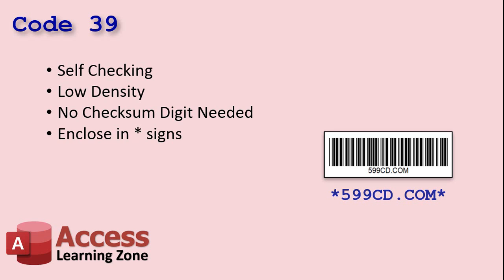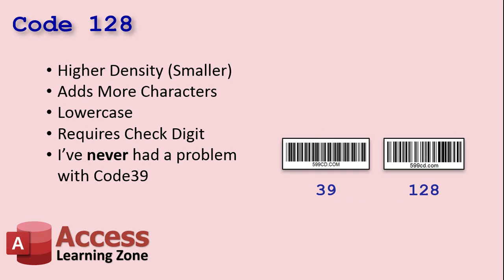All you have to do is enclose whatever your code is inside of asterisks — that's it. That's how the barcode scanner knows where to begin and end the barcode. Code128 is higher density, which means it can make a smaller barcode with more information packed into a smaller space.